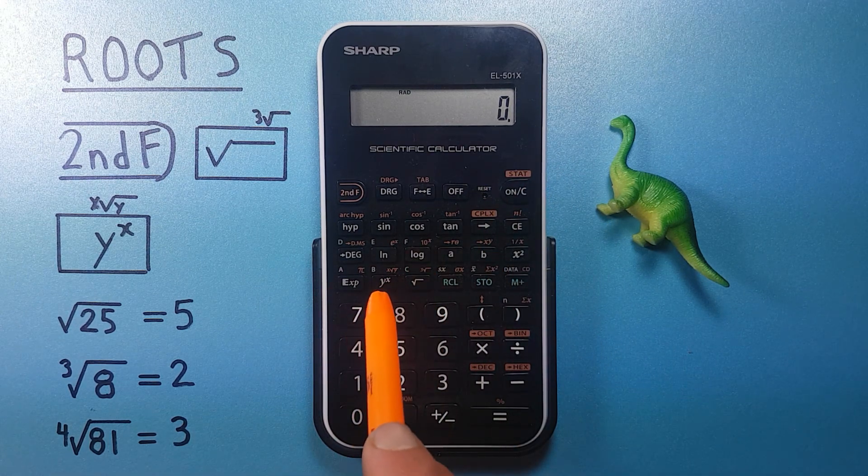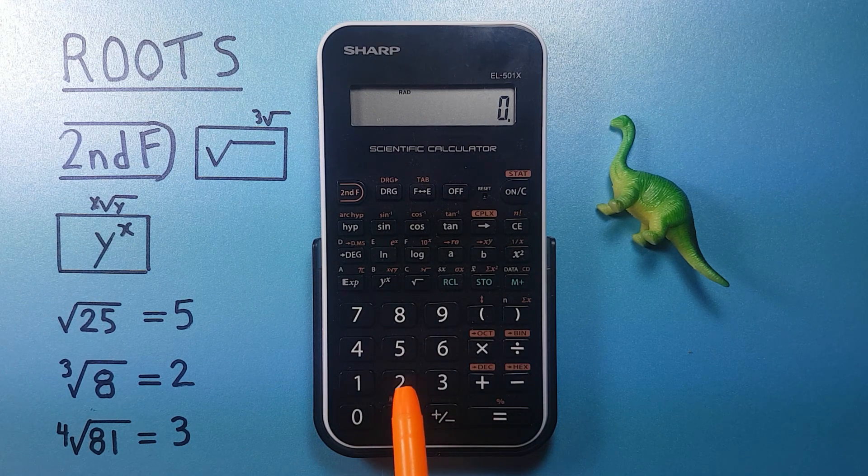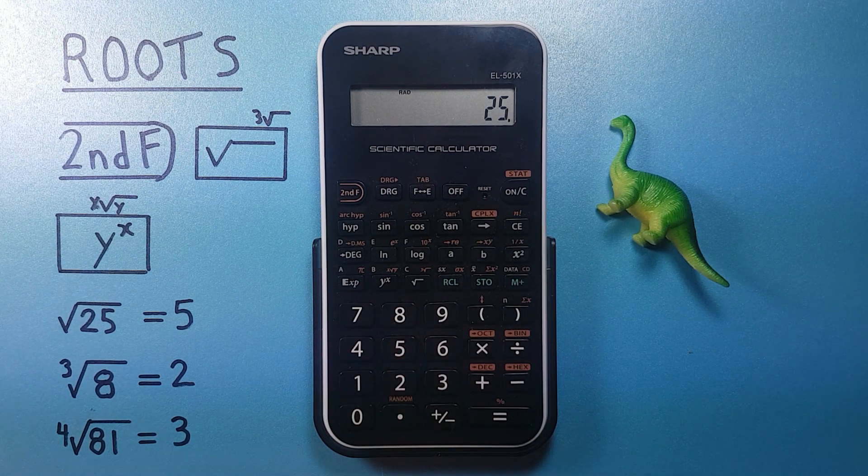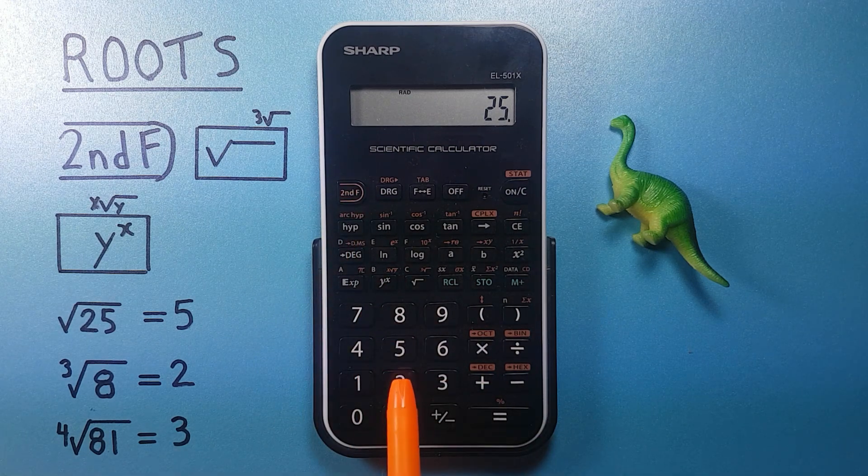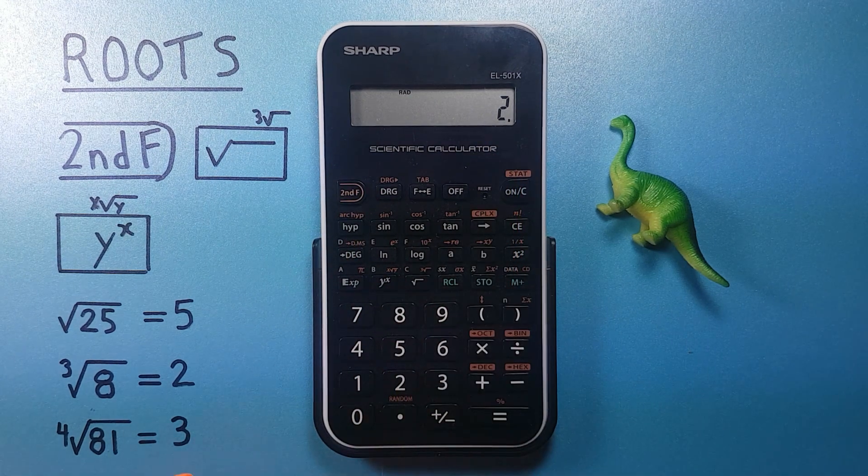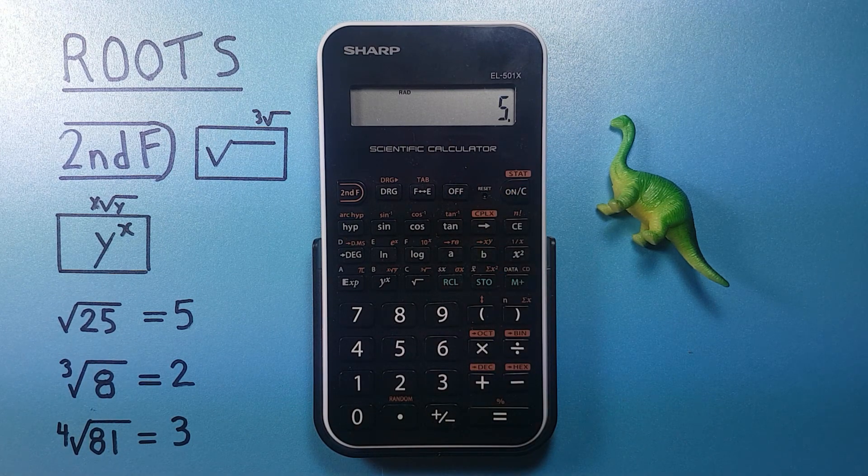We can confirm this y to the x root key works by trying it with the 25. So 25, second function y to the x, 2. This should give us 5 because it's square root, and it does. There we go.